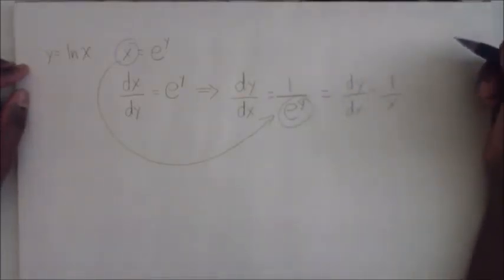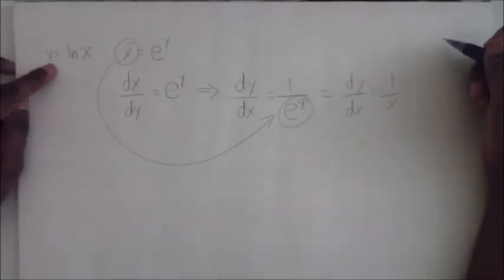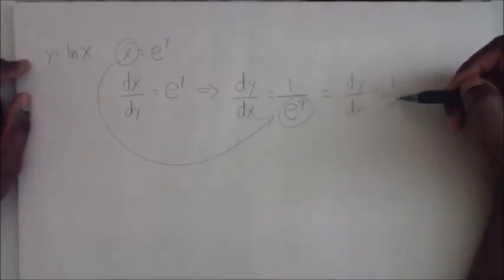And so that would prove that if y is the natural logarithm of x, then the derivative of y with respect to x is one over x. I hope you find this informative, and I'd like to thank you very much for watching.